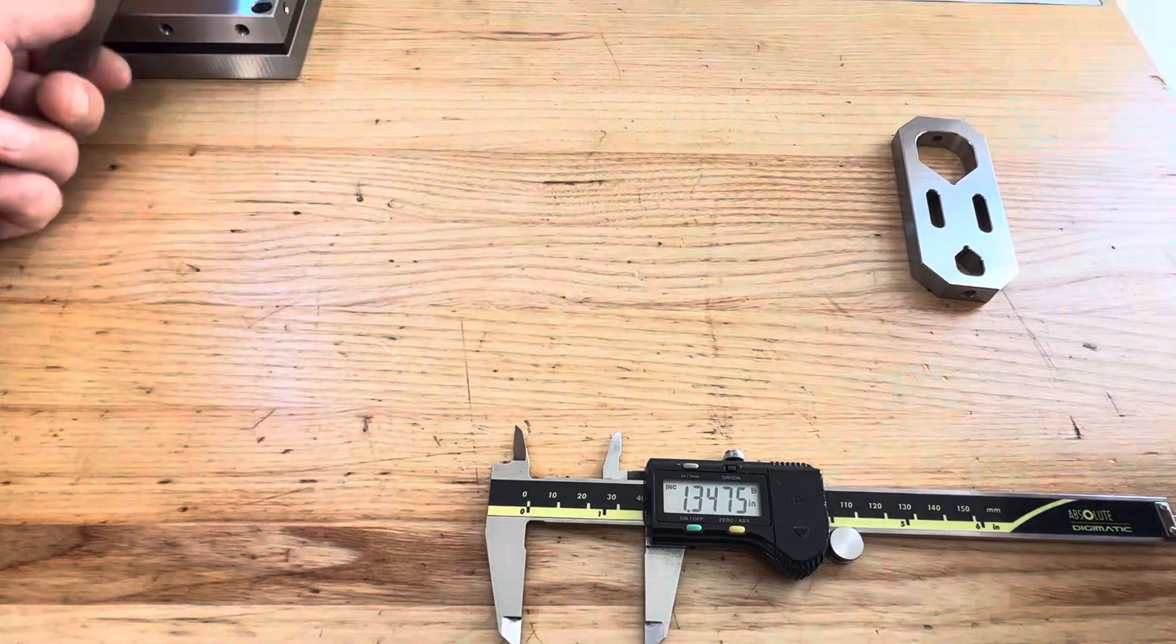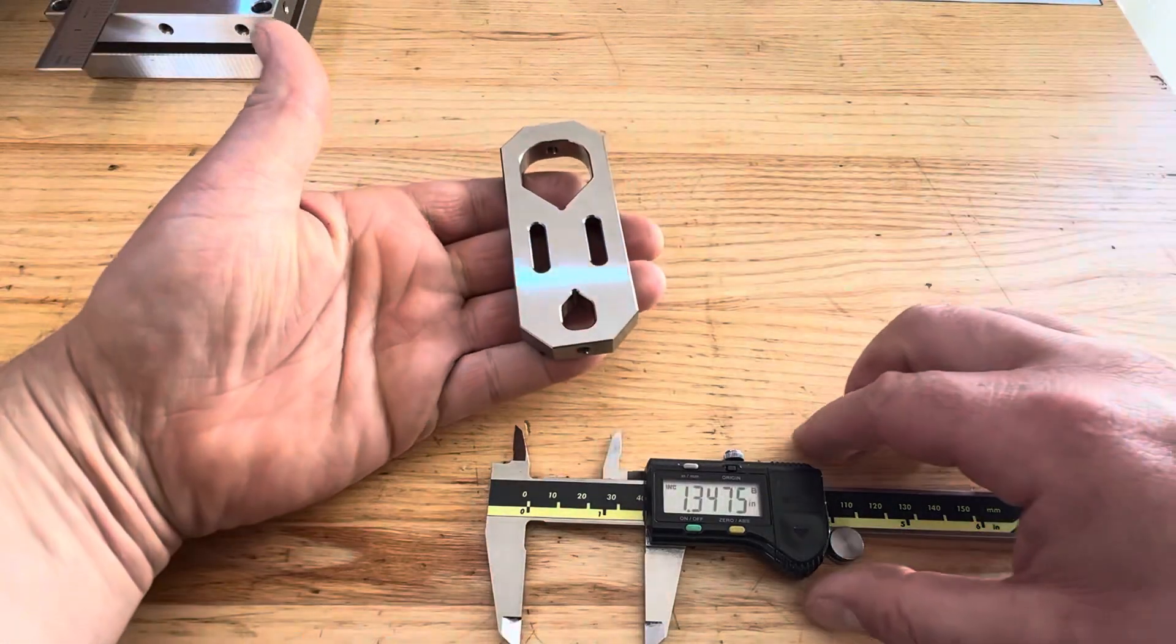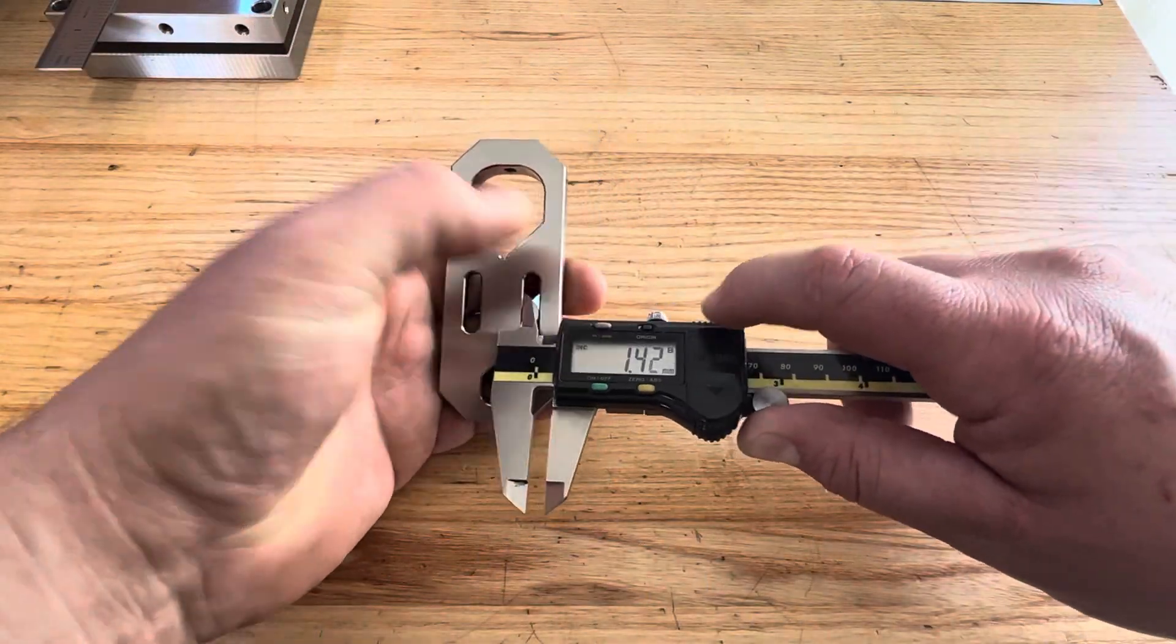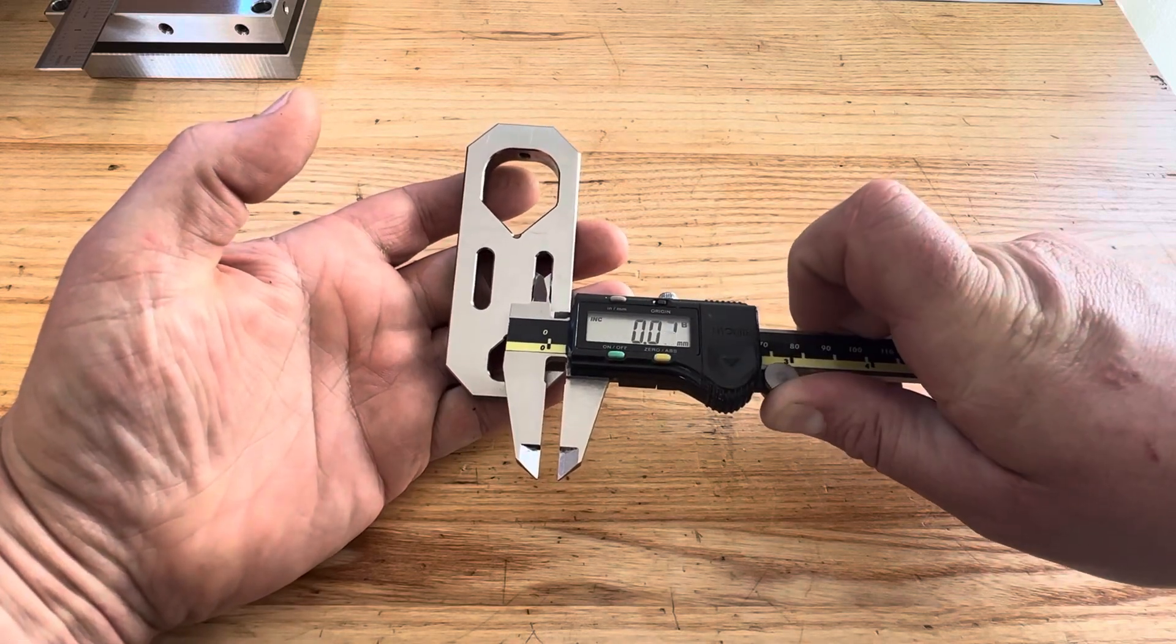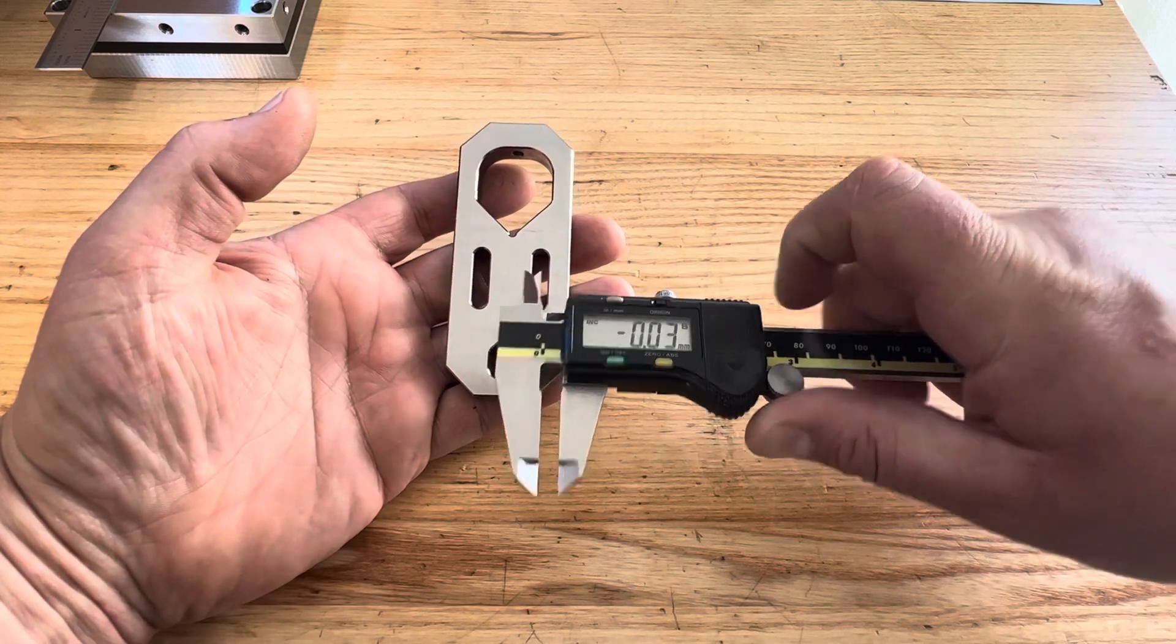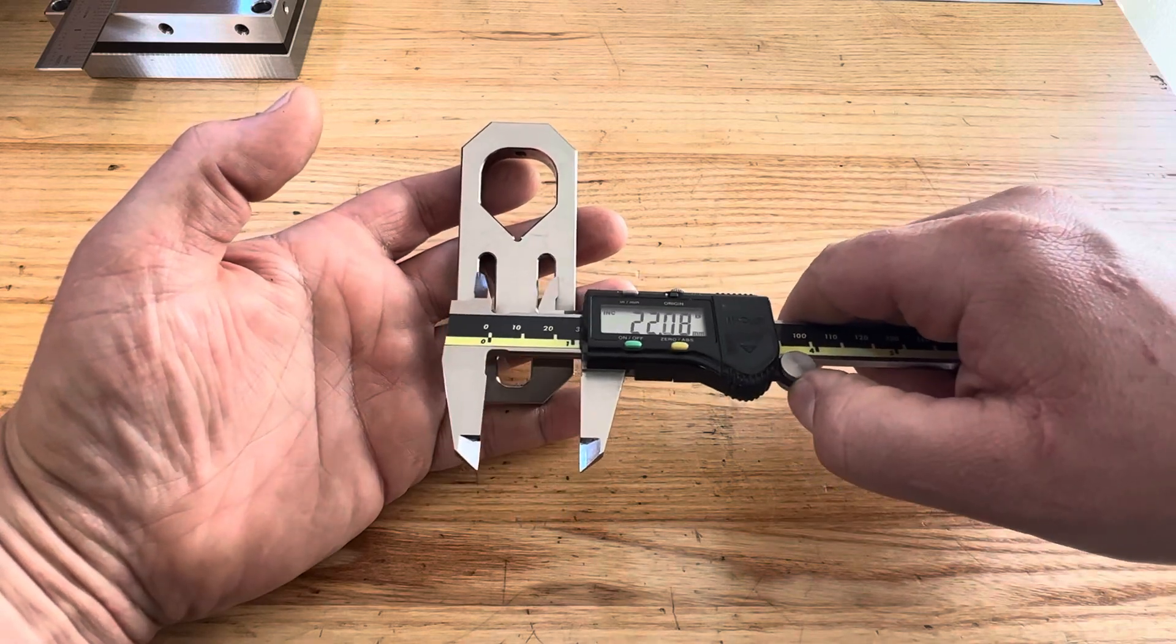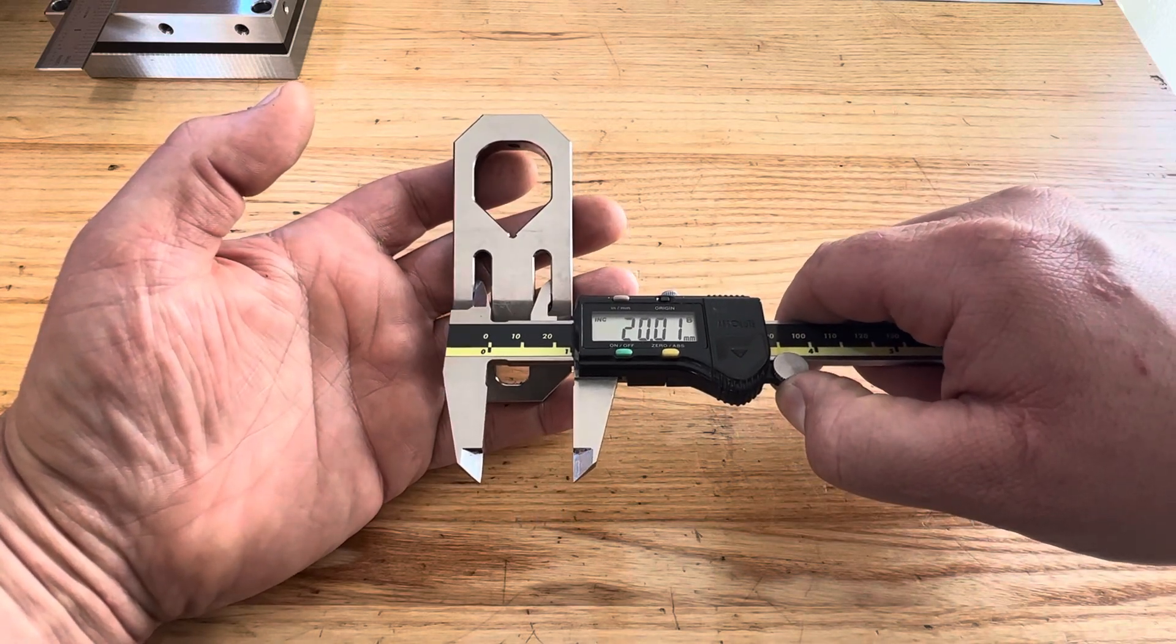This is not limited to holes. It also works on slots. Same concept: measure the width of one of the features, zero your instrument, and then measure the furthest point to furthest point. That's your center line distance.